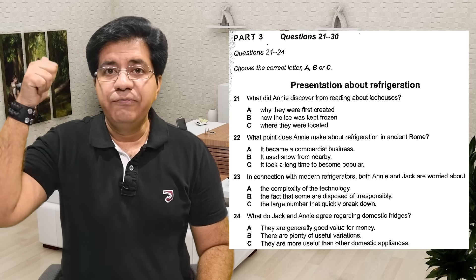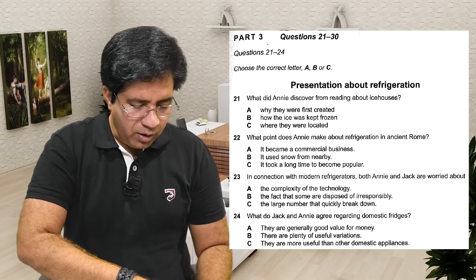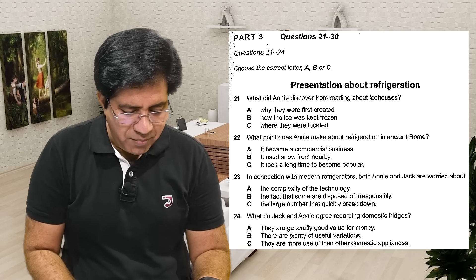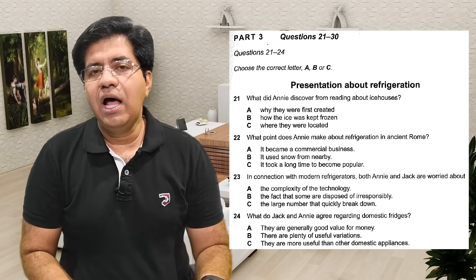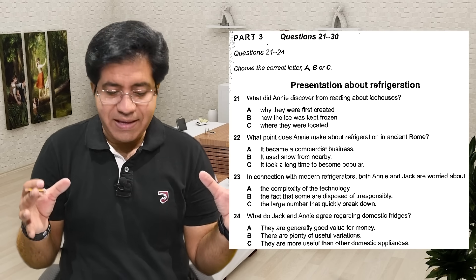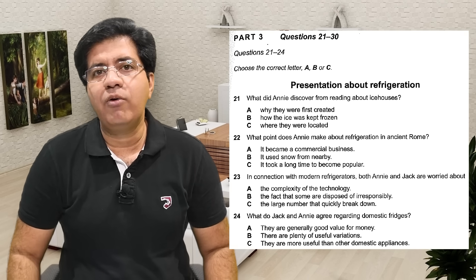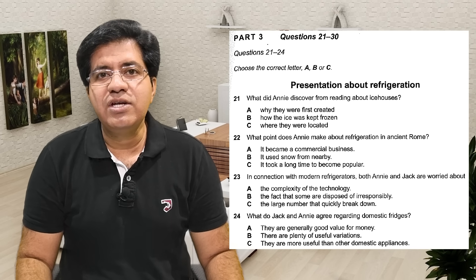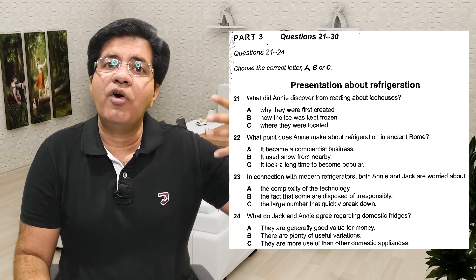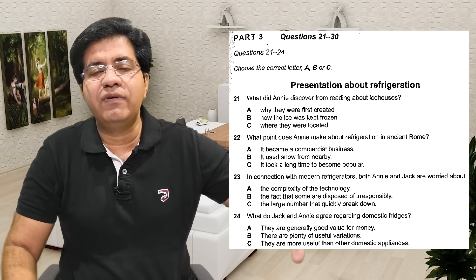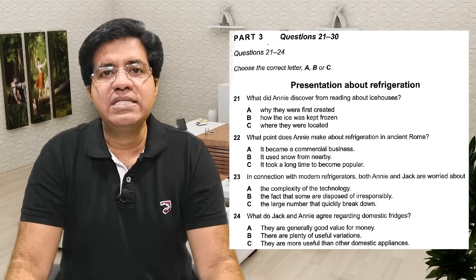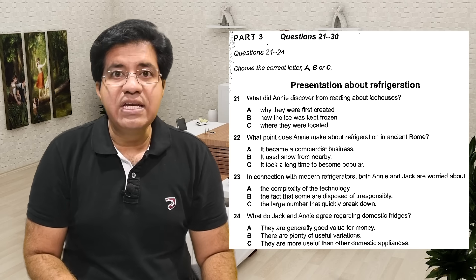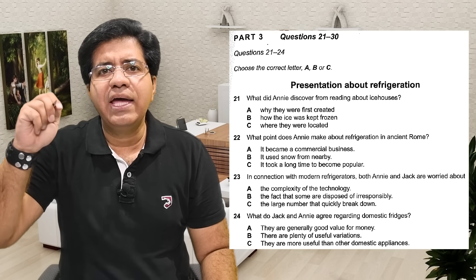First, read the question carefully. Question 21: 'What did Annie discover from reading about ice houses?' So Annie discovered something from reading about ice houses, and whatever she discovered will be the answer. Whatever she did not discover, wanted to discover but didn't, or will discover — all these are traps. Option A: 'Why they were first created' — just focus on 'why created.'